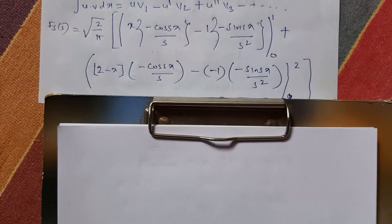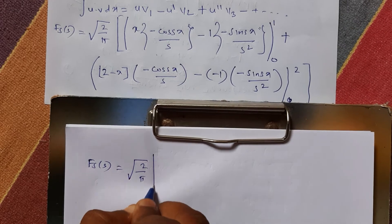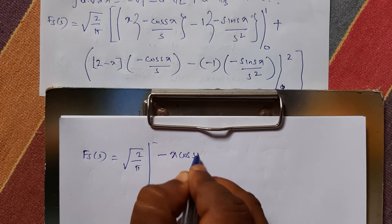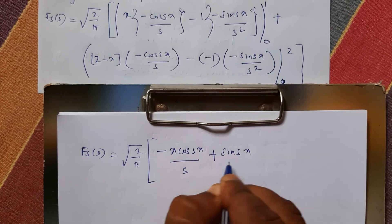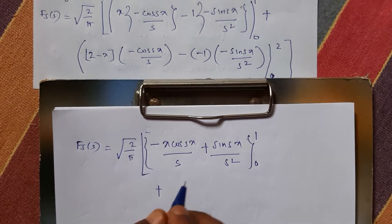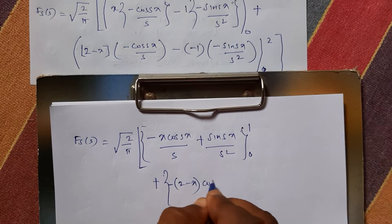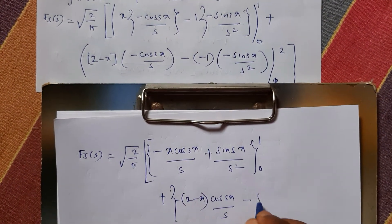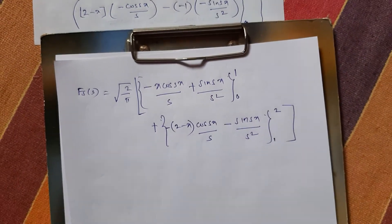Now I will simplify. F_s(s) equals square root of 2 upon pi: [−x·cos(sx)/s + sin(sx)/s²] from 0 to 1, plus [(2−x)·(−cos(sx)/s) − sin(sx)/s²] from 1 to 2. Carrying through the signs: minus·minus becomes plus, giving the correct sign arrangement for each term before applying the limits.